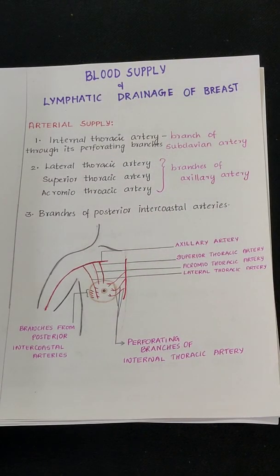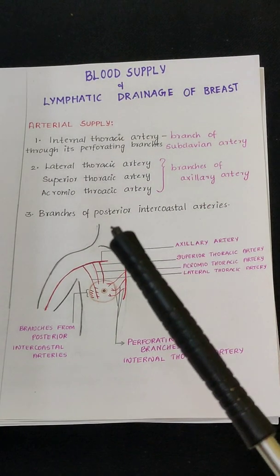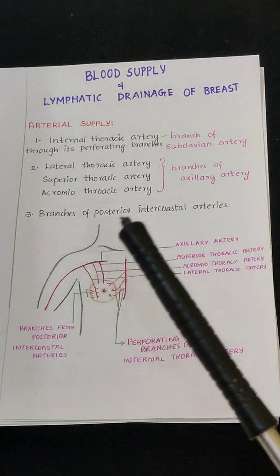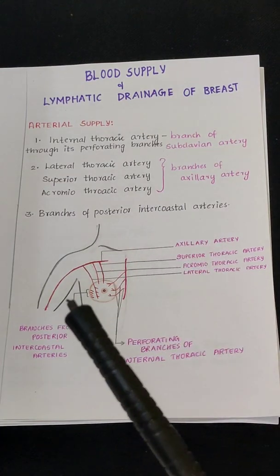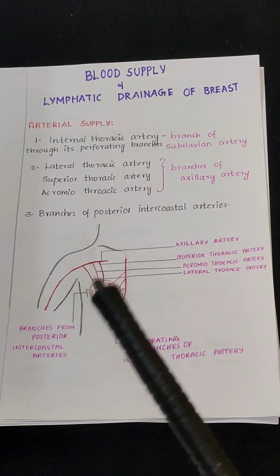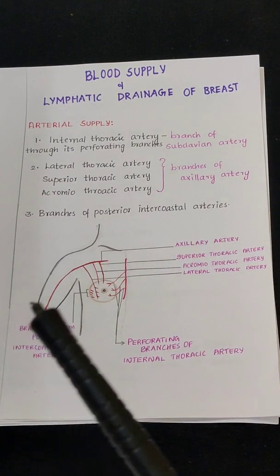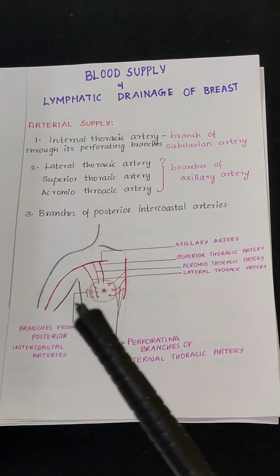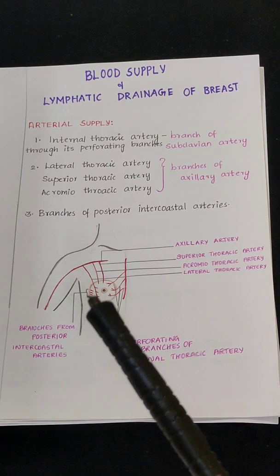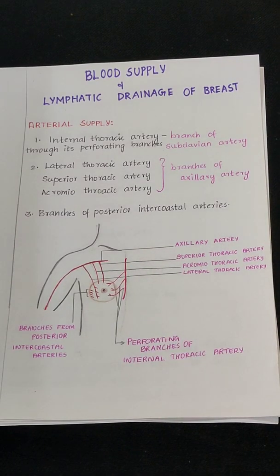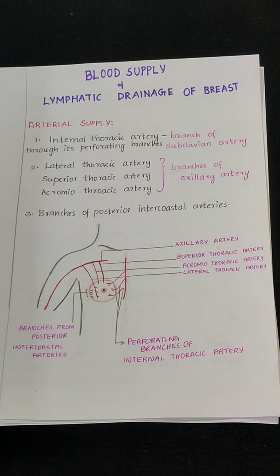The third source is branches of the posterior intercostal arteries. These branches of the posterior intercostal arteries also provide arterial supply to the breast.